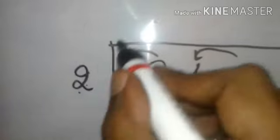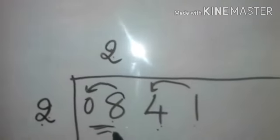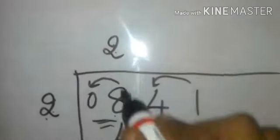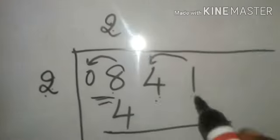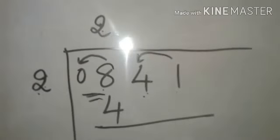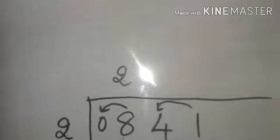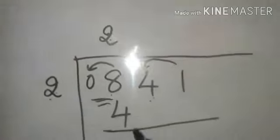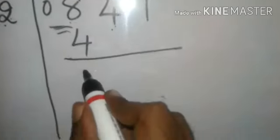So I'll write it here. Two into two is four. Don't write two four is eight. This is not the ordinary division. Here we do the long division method. That's two into two is four. So eight minus four is four.